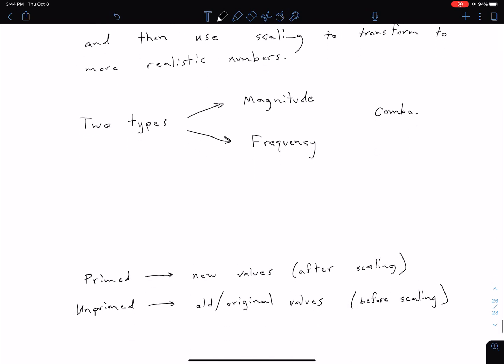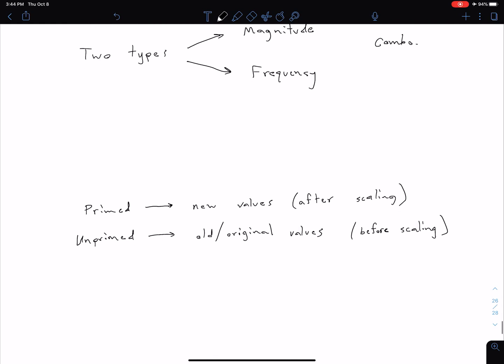Throughout the next few videos, I'm going to be talking about primed and unprimed values. For instance, I'll have an R' and an R. The R' is going to be the new value after scaling, and the unprimed is going to be the old original value before scaling.